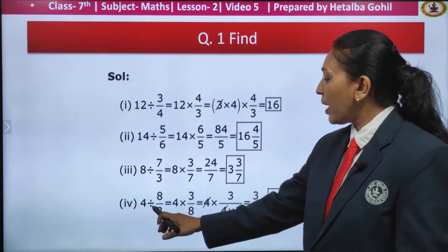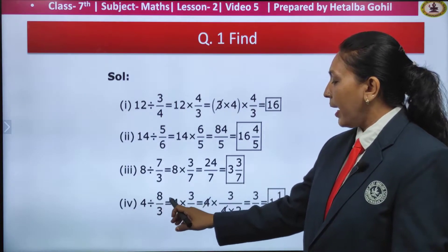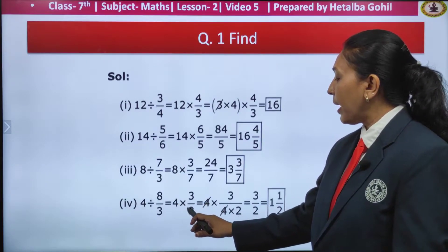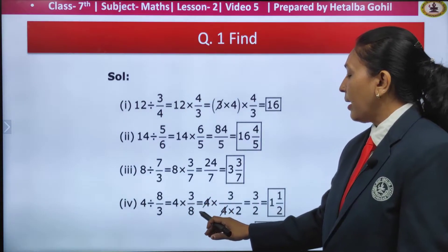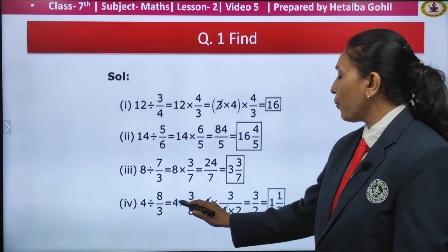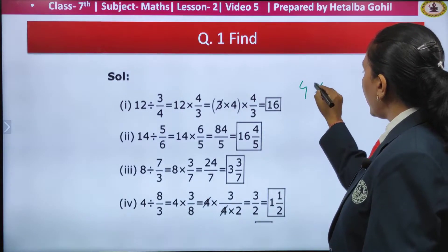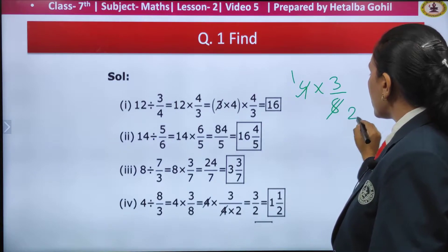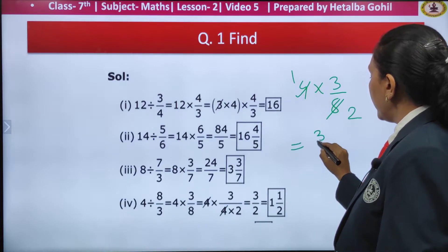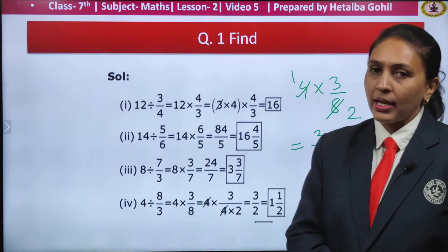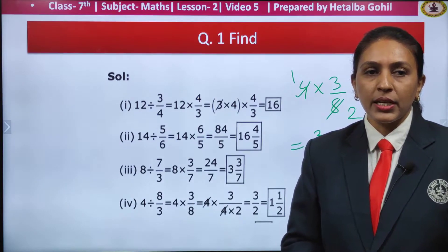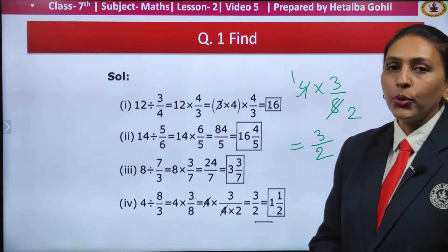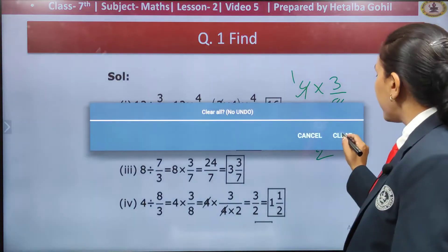Similarly, the next one: 4 divided by 8 upon 3. The next step is 4 multiplied by 3 by 8. You can see here 4 into 3 by 8 — after cutting, you get 3 by 2 as my answer. And after changing into mixed fraction, I get 1 and 1 upon 2 as my answer.